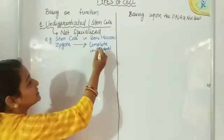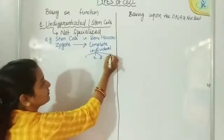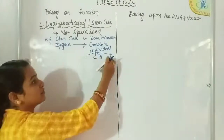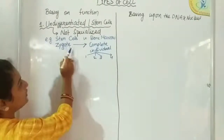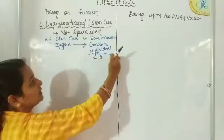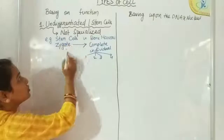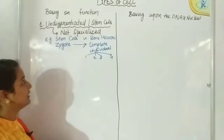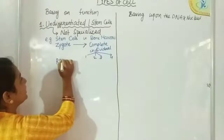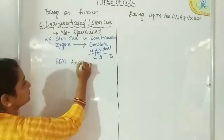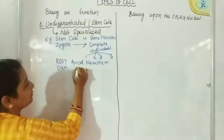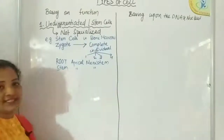This individual has many types of tissues, and these tissues perform specific types of functions. That means this zygote differentiates into all these types of tissues to perform specific functions. That is why the zygote is also an example of a non-differentiated cell. In plants, the root apical meristem and the shoot apical meristem are also examples of undifferentiated cells.